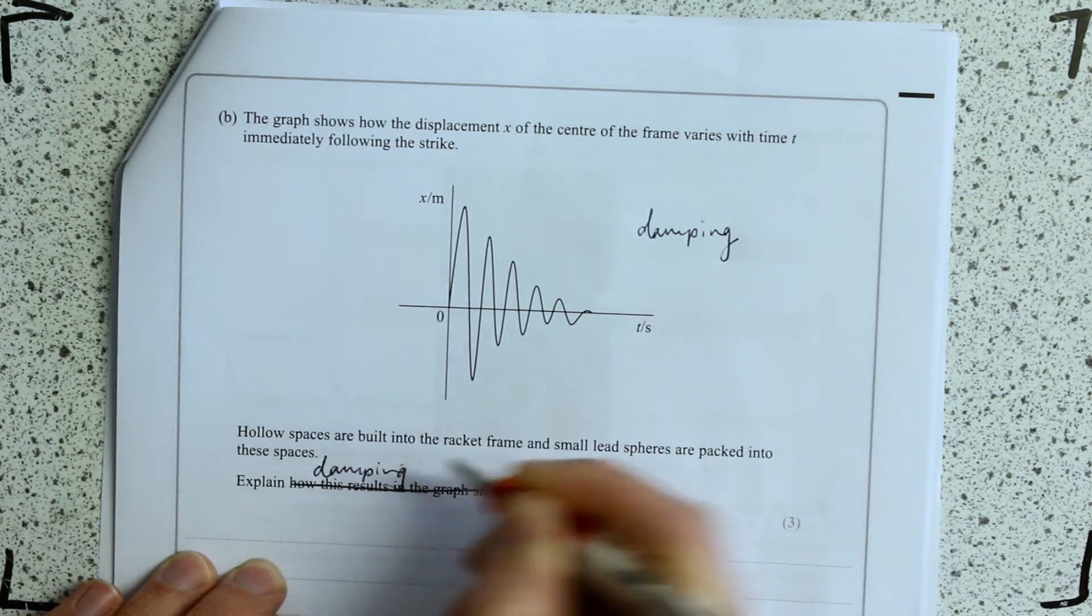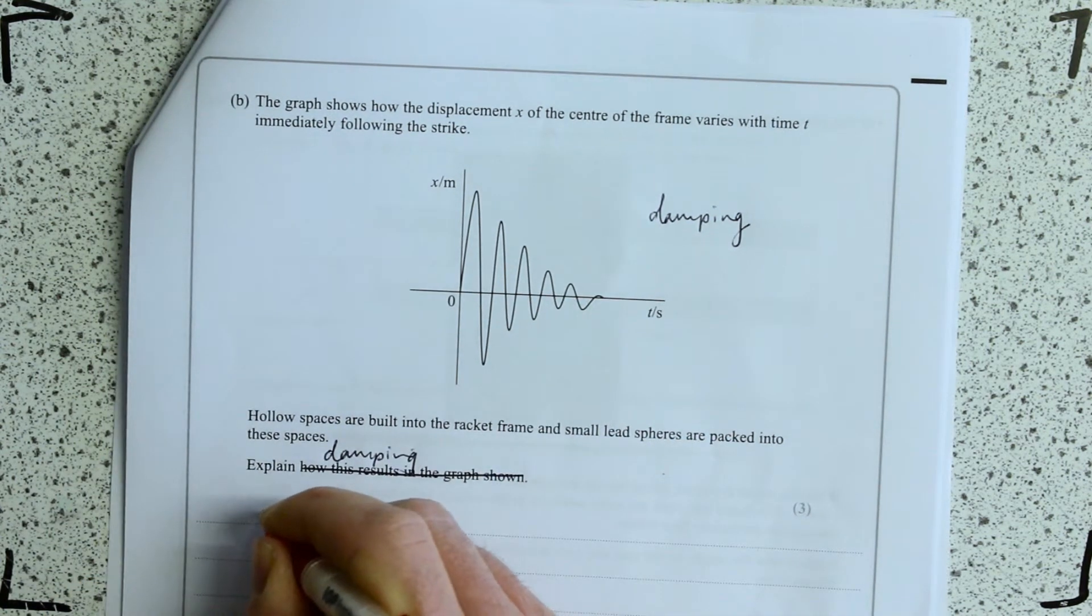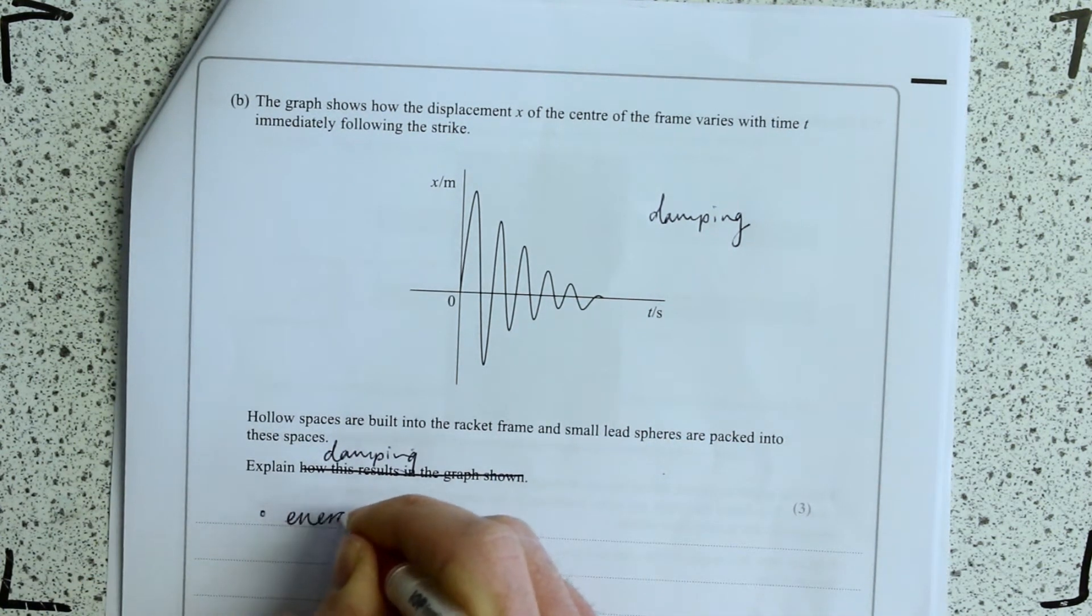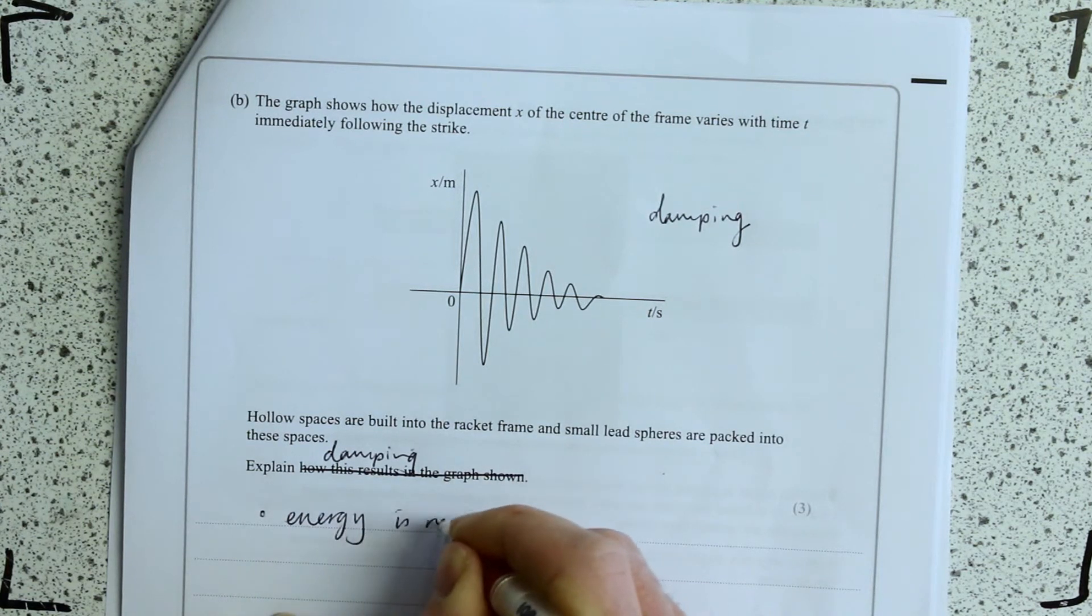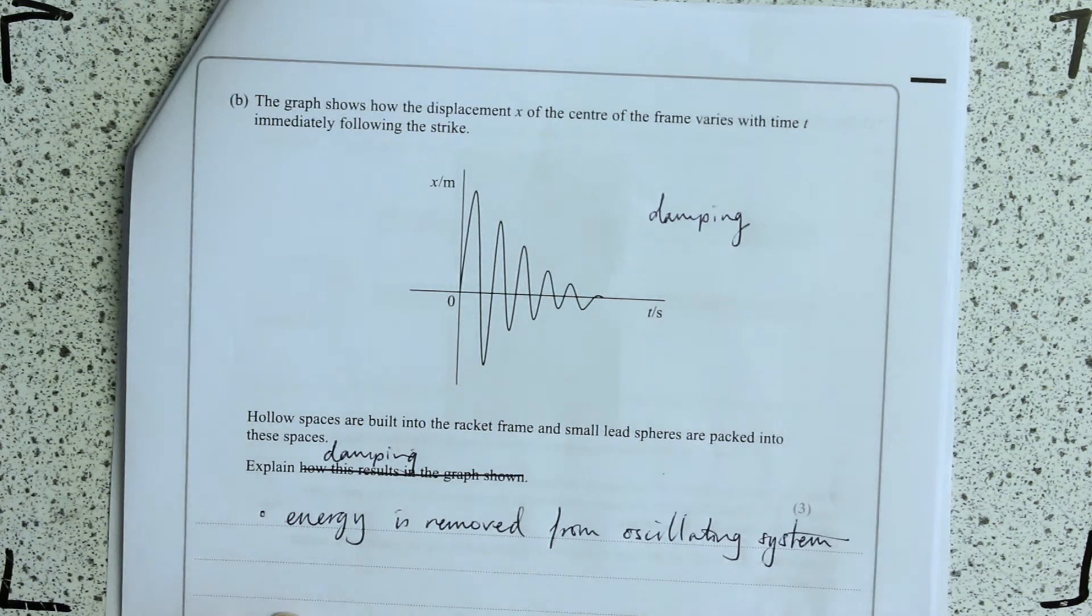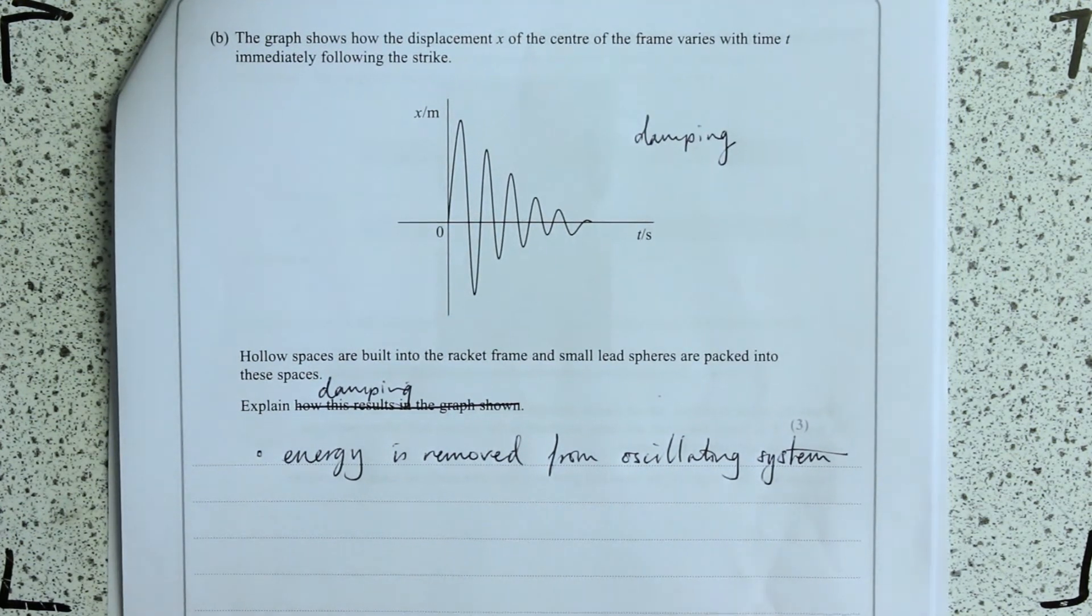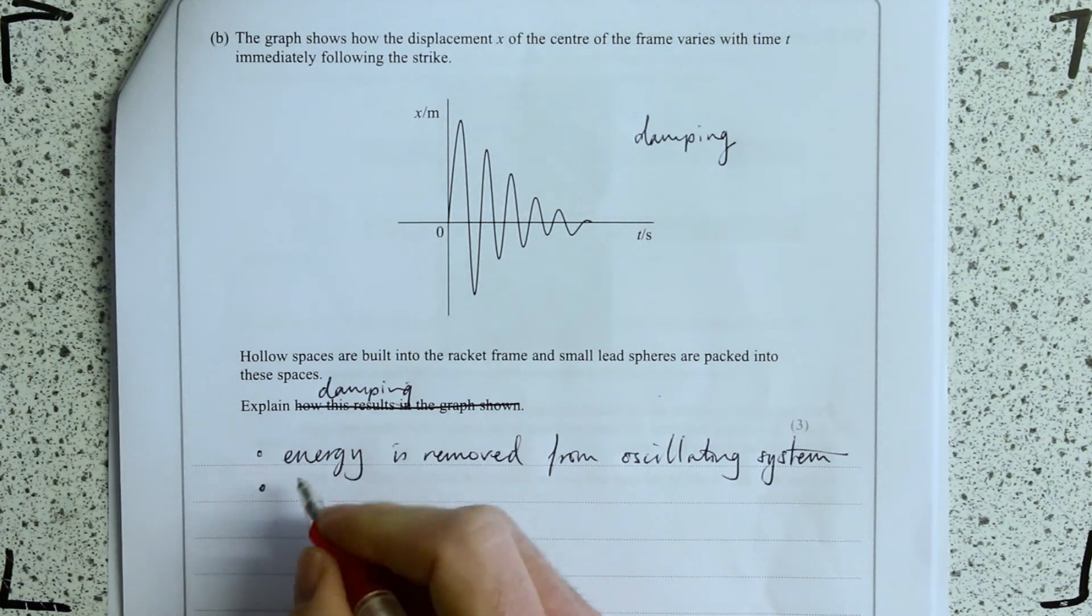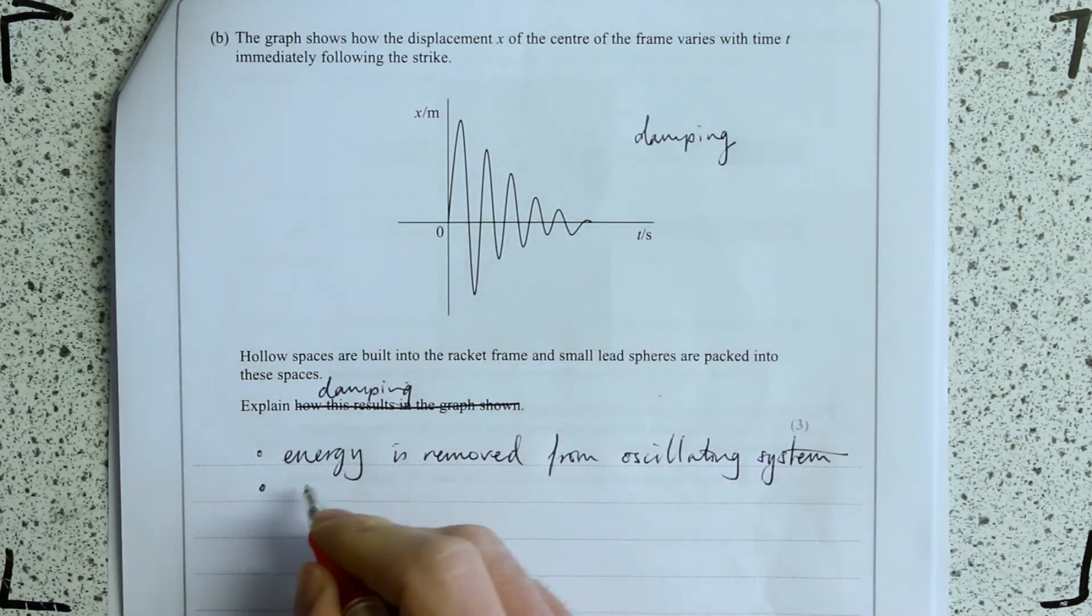So my first two points I'm going to make is that energy is removed from the system. What damping is. So if energy is removed from the system, this causes a reduction in amplitude over time.